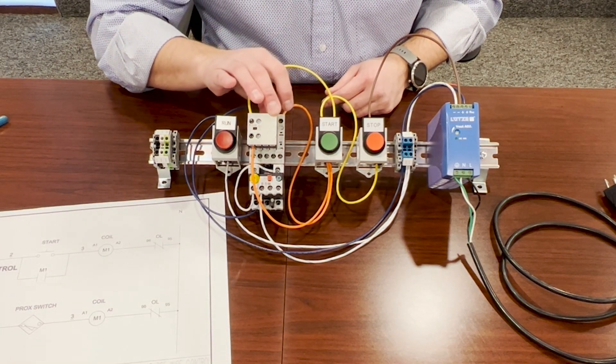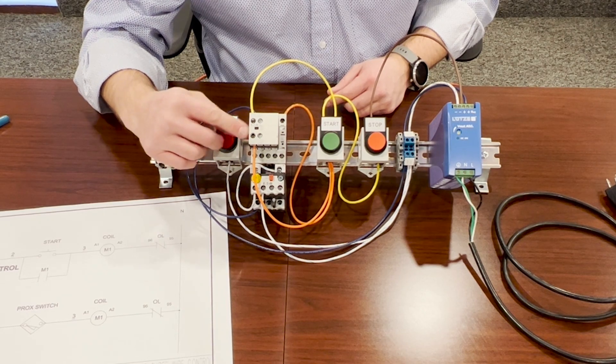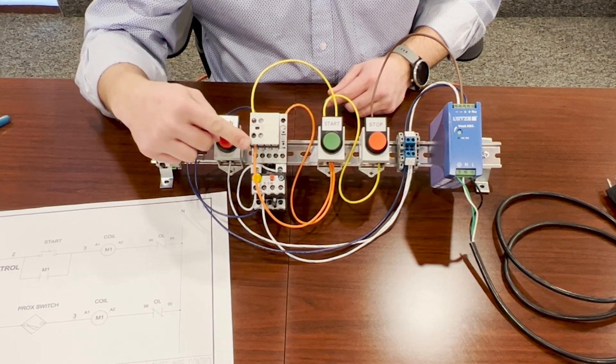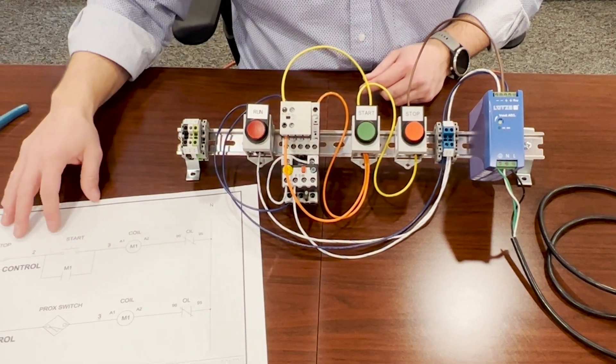So when this motor starter is energized, this contact that's normally open, it's going to close. And when it closes, it's basically going to bypass the start button and show that on a drawing.